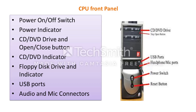The CPU front panel includes: a power on/off switch, CD/DVD drive with open/close button and indicator light, floppy disk drive and indicator, USB ports, and audio and mic connectors. These are the components available on the CPU front panel.